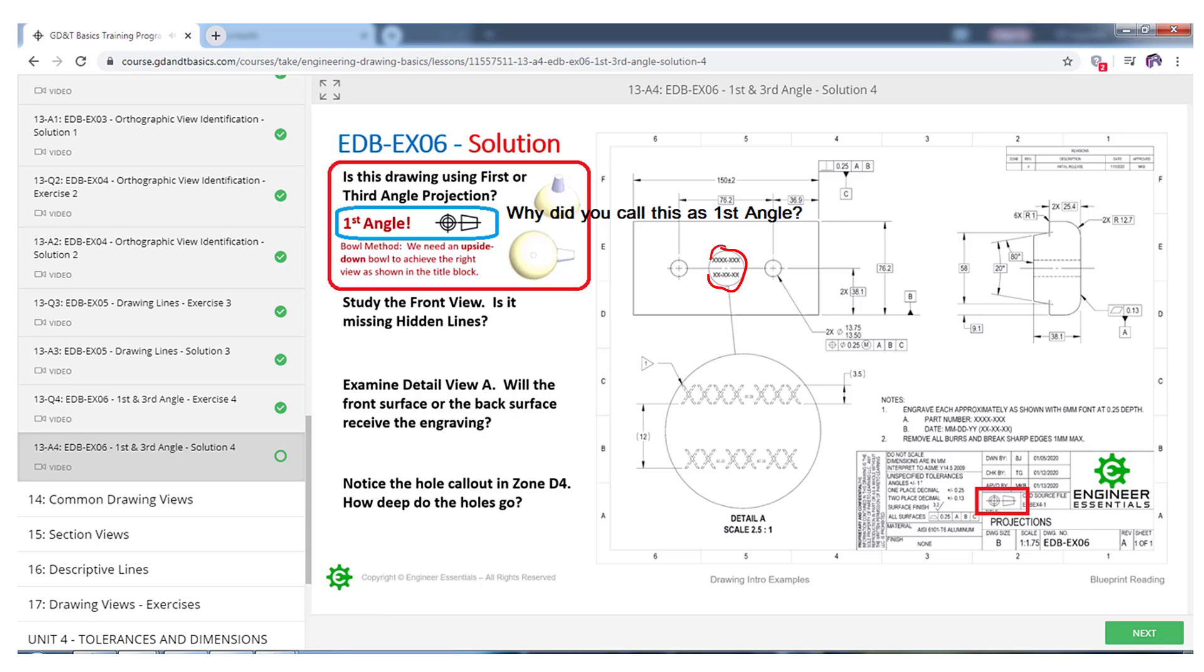So if you look at this drawing and you were thinking that it was third angle, then the way that this would be projected out with those being hidden lines, you would think that the engraving here would be on this surface, when in fact it is not on that surface due to the fact that it's first angle projection. It is on this surface here.